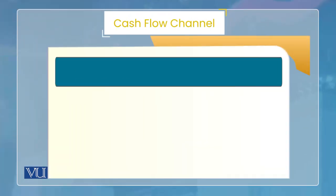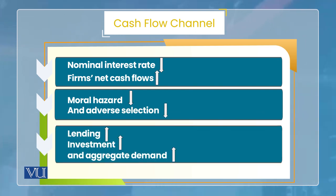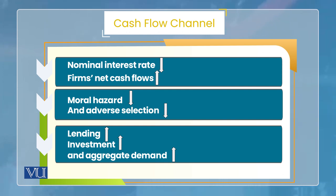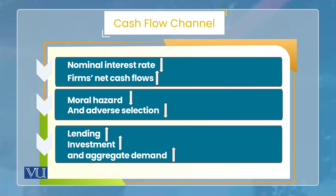Ab jo net cash flows increase hote hain, toh isko liquidity kehte hain — yaani ki firms ke paas default karne ke chances kam ho jate hain, unki liquidity increase ho jati hai. Toh cash flow channel kaise work kerta hai: nominal interest rate kam hote hain. Aap ne yeh bhi dhyan mein rakhna hai ki is channel ko main nominal interest rate se start kar raha hoon — kyunki firms ki debt obligations hamesha nominal terms mein hoti hain. 100 rupay ka bond hai toh 100 rupay hi wapas karne hain, uski upar agar 10% interest rate hai toh 10 rupees extra — chahe inflation rate kuch bhi ho jaye.